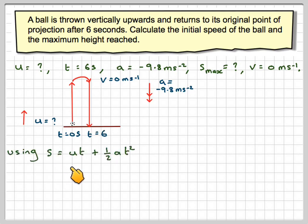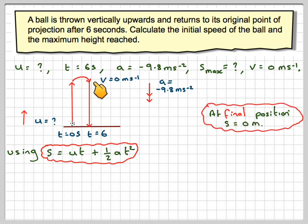So if we use S equals UT plus half AT squared, at the finish point, S, the displacement, will be 0, because it's gone up and it's gone back to the same place. So 0 will be equal to U times 6 plus a half times minus 9.8 times 6 squared. So we've got an equation in U which we can now solve.